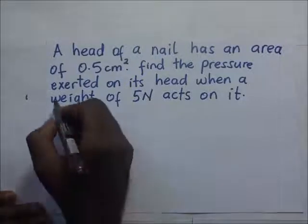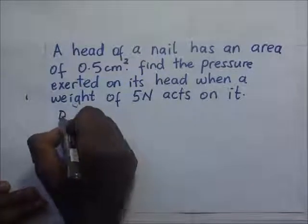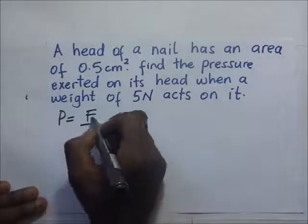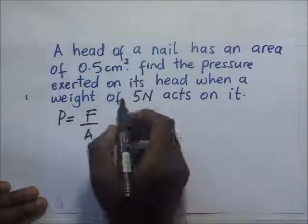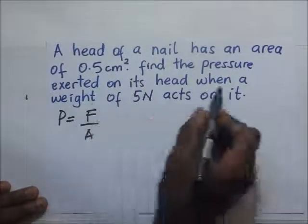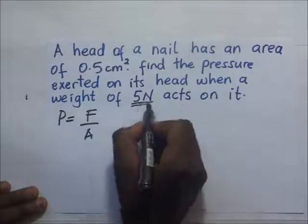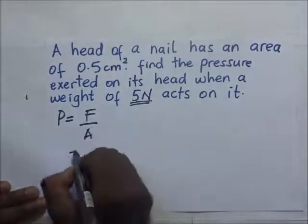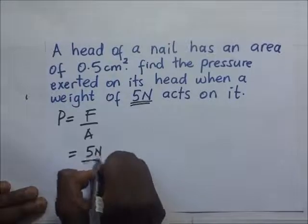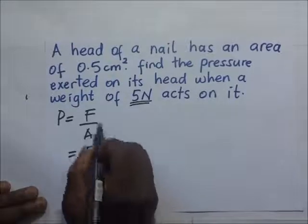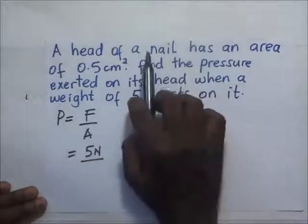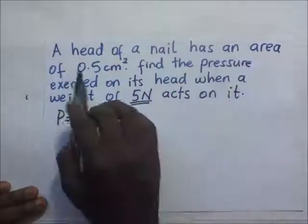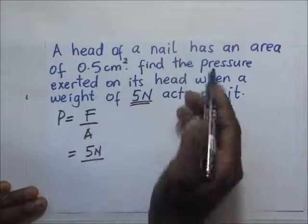Pressure is going to be equal to force over area. The nail is being acted on by a weight of 5 newtons, so the force is equal to 5 newtons. We divide that by the area, and the area of the head is 0.5 cm squared.